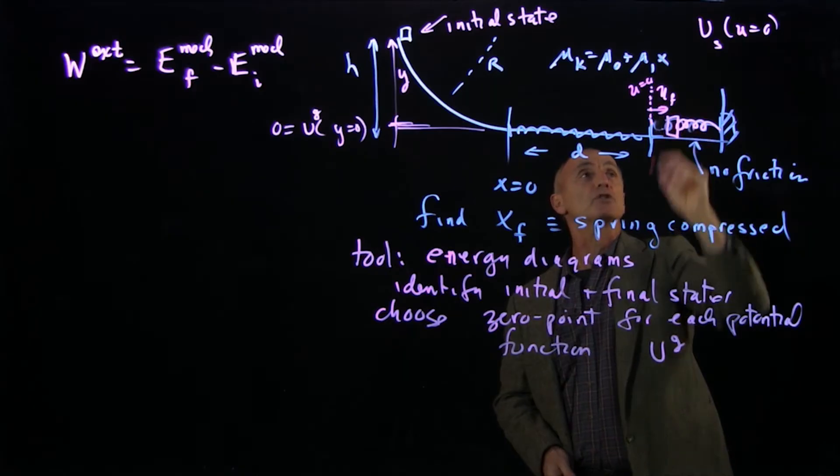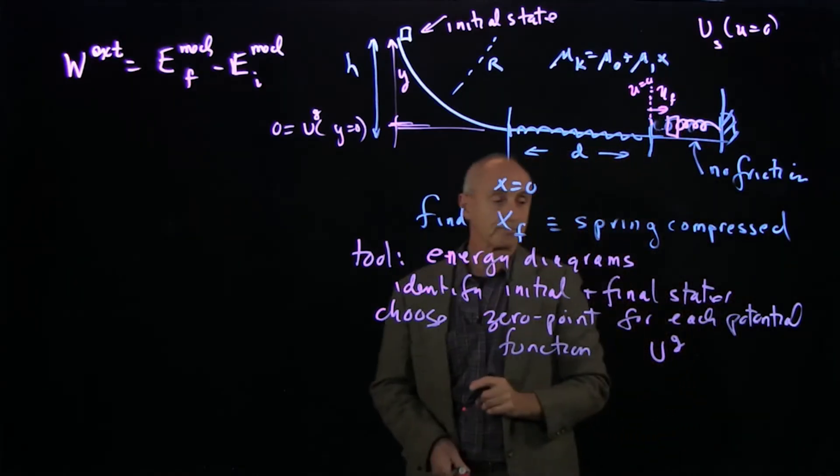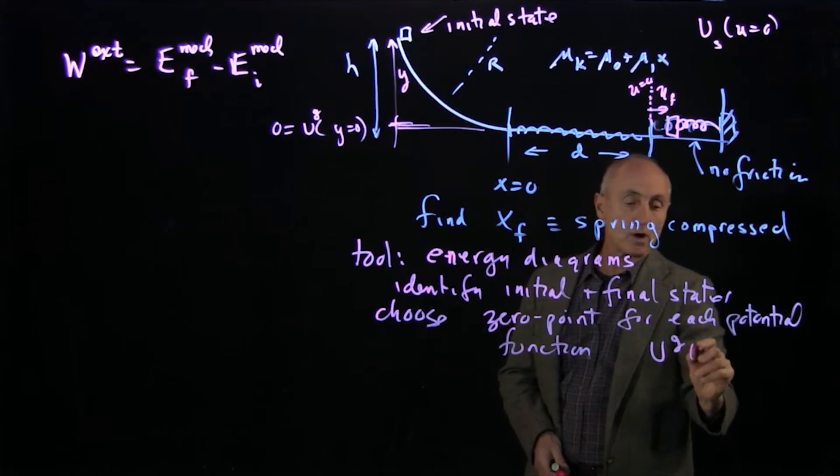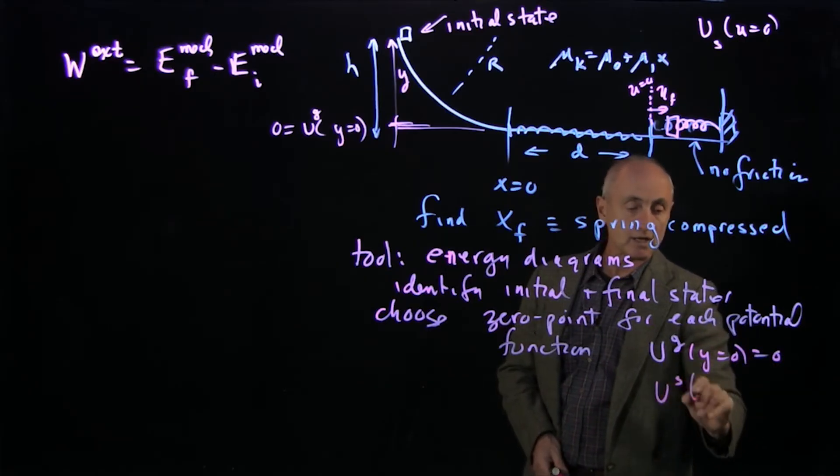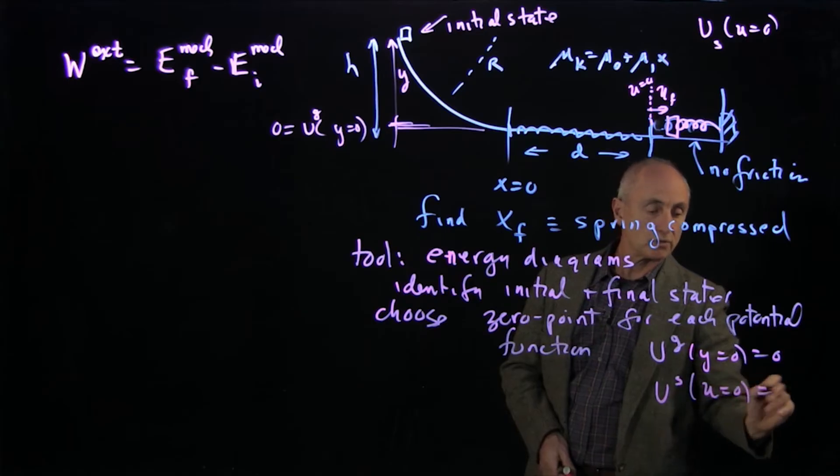And this is where u is 0. So u final just measures the stretch of the spring. And so at y equals 0 is 0. And u spring at little u equals 0, 0.